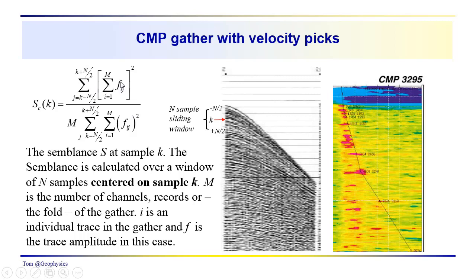And then over here, we're taking the sum of the f is just the amplitude of the signal, the amplitude of the reflections that we're looking at. So we have the jth sample in the window, and i is just an individual trace in the gather that runs from 1 to m here.